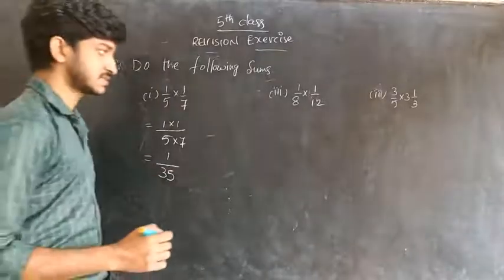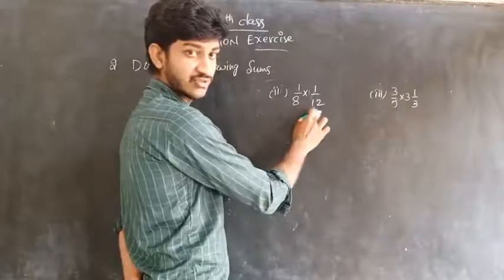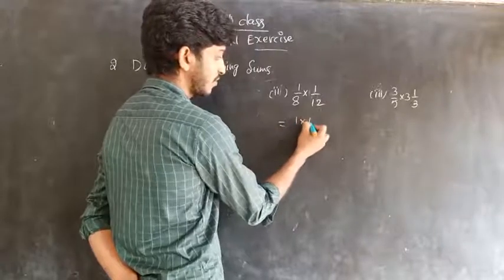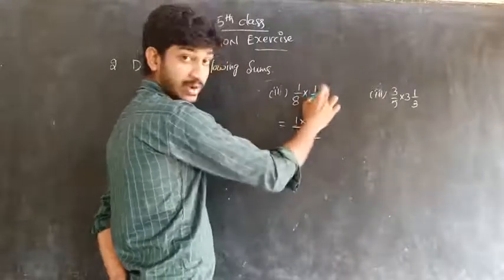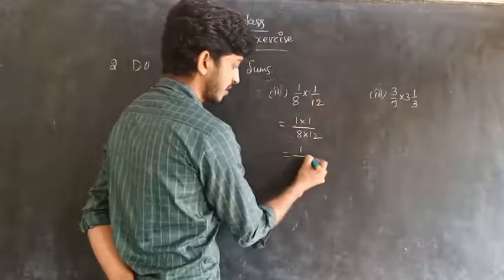Second one: 1 by 8 into 1 by 4. So 1 by 8 into 1 by 4 means 1 into 1 by 8 into 4. Numerator into numerator divided by denominator into denominator. 1 times 1 is 1, 8 times 4 is 32, equals 1 by 32.